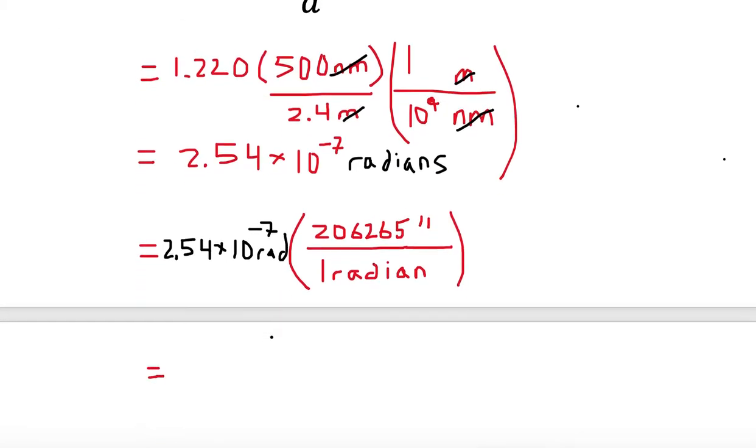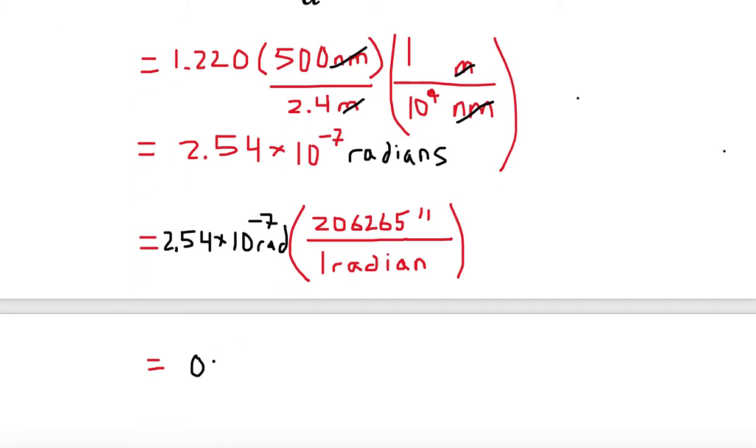So I carry that down: 0.0524 arc seconds. And that is our answer. Our theta minimum is 0.0524 arc seconds.